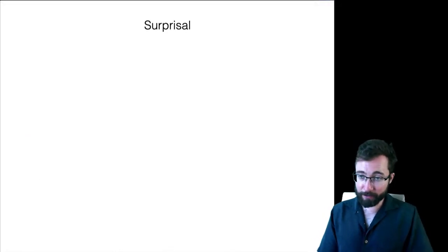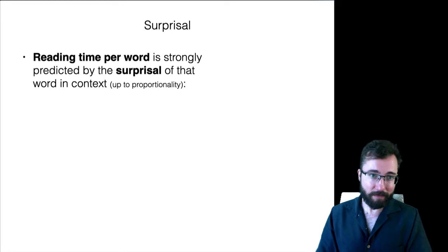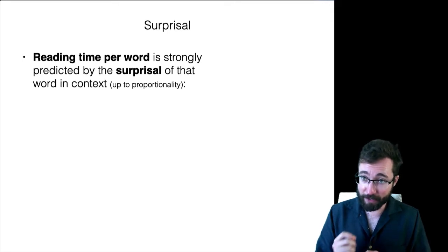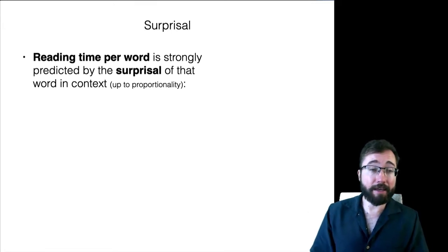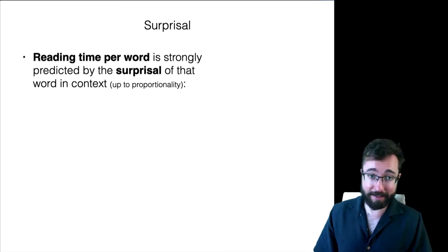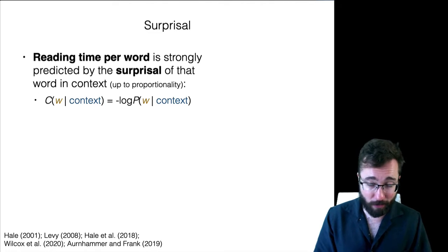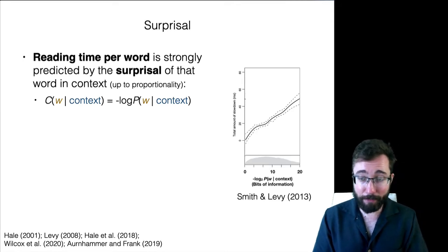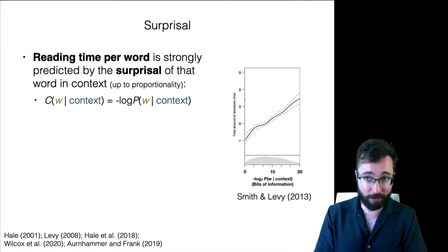We're going to build from an existing information-theoretic model of language processing called surprisal. Surprisal theory holds that the processing difficulty you experience as a comprehender per word — measured as something like the reading time per word — is predicted by the surprisal of that word in its context up to proportionality. The complexity of understanding a word w given some context is given by the negative log probability of that word given the context. That negative log probability is what's called surprisal. This is now empirically quite well supported: you get a very good linear relationship between surprisal and reading times in large corpora of reading times.